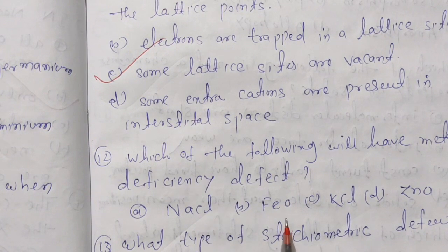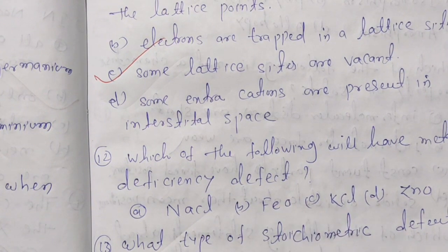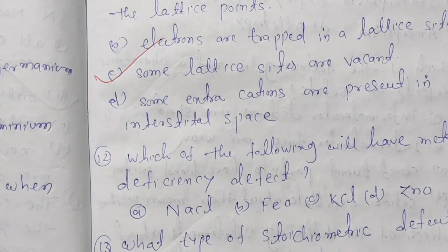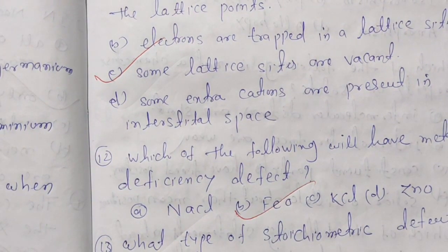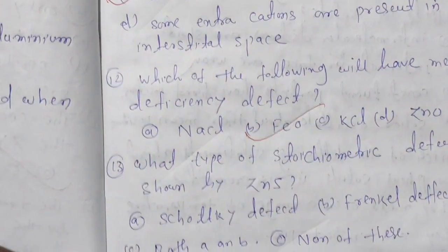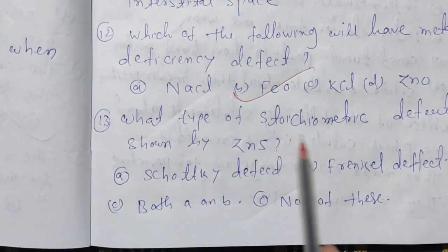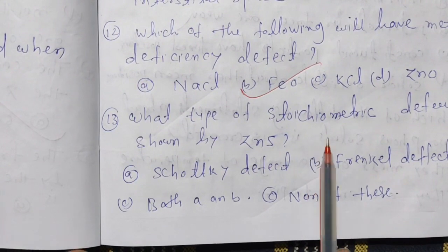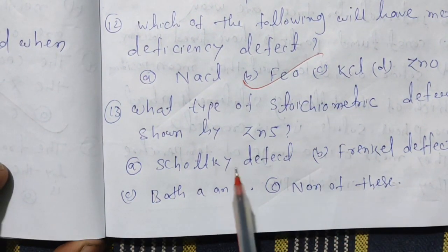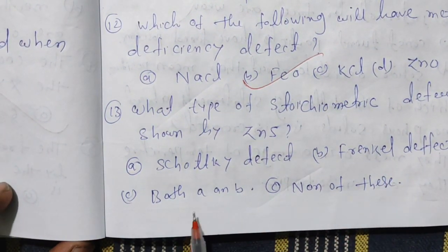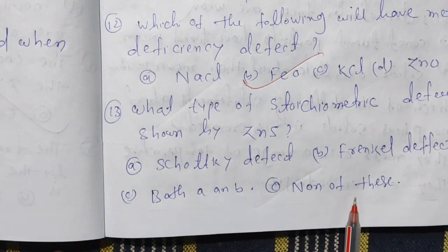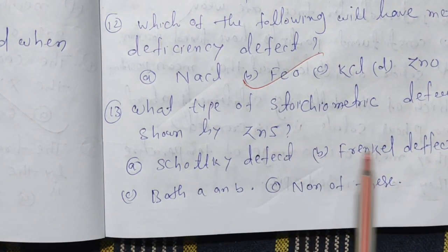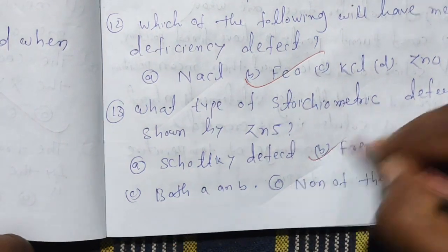The following will show a metal deficiency defect: NaCl, FeO, KCl, and ZnO. What type of stoichiometric defect is shown by ZnS? ZnS shows Frenkel defect. The answer is option B.